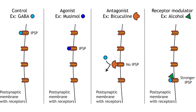The neurotransmitter receptors are another critical location for drug and toxin action. Agonists mimic neurotransmitter effects, whereas antagonists block neurotransmitter effects. Musimol, a component of some mushrooms, is an agonist for the ionotropic GABA receptor. Bicuculline, a component in some plants, is an antagonist to this receptor and blocks the action of GABA.